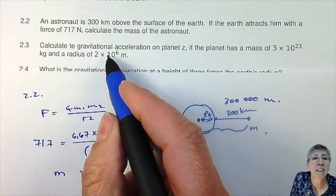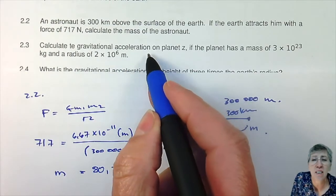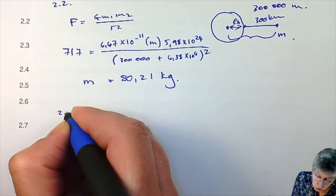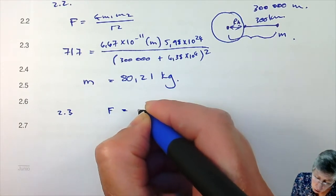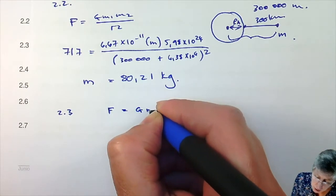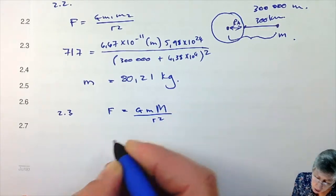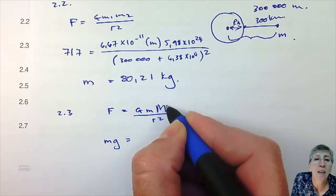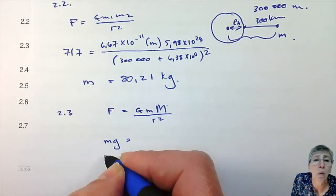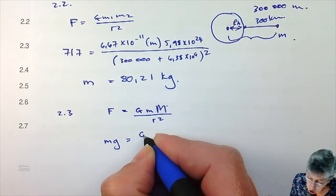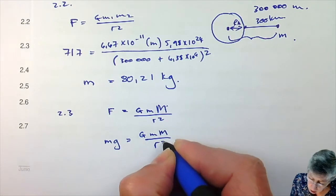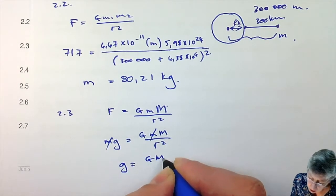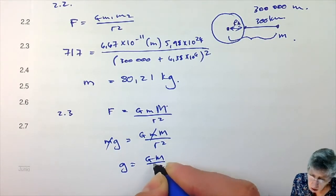Question 2.3 asks us to calculate gravitational acceleration — that equation is not on the information sheet, so we have to work it out first. We say F equals G times M (big M for the earth) over R squared, and that equals m times g. So G M m over R squared equals m times g — the m's cancel out, and we end up with g equals G M over R squared.